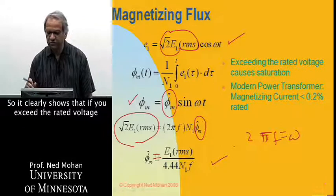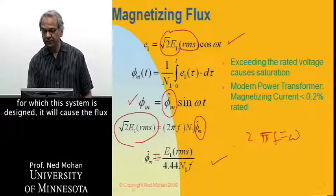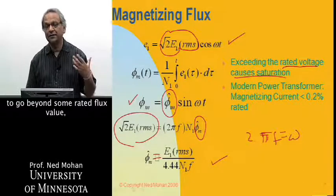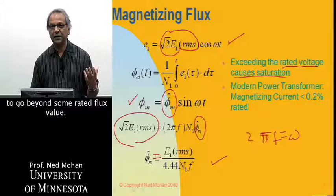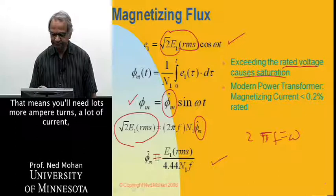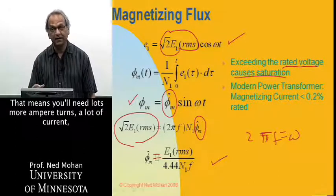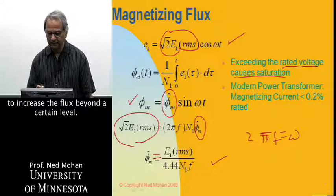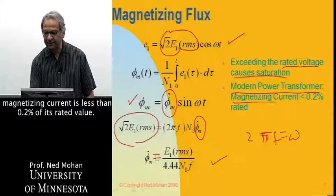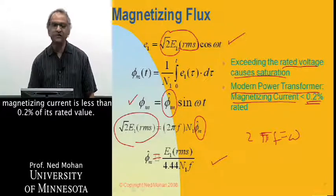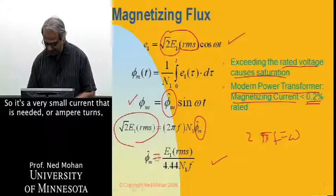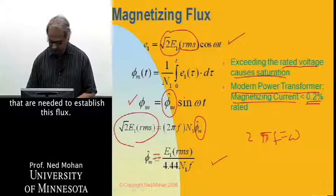This clearly shows that if you exceed the rated voltage for which this system is designed, it will cause the flux to go beyond some rated flux value, and this whole thing will saturate — meaning you will need a lot more ampere-turns, a lot of current to increase the flux beyond a certain level. In modern power transformers, magnetizing current is less than 0.2% of its rated value, so it's a very small current needed to establish this flux.